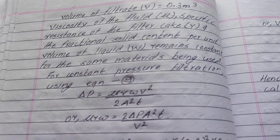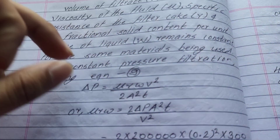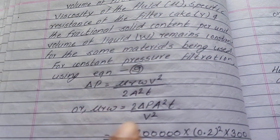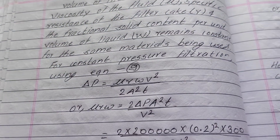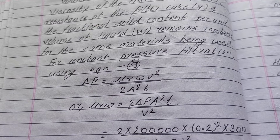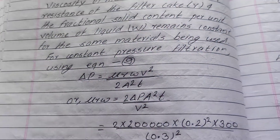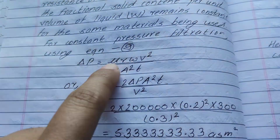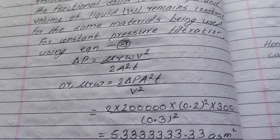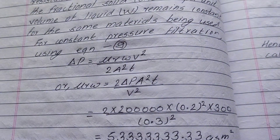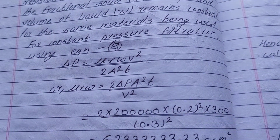I will use the constant pressure formula: ΔP = μrwb² / (2A²t). From this, μrw = 2ΔP A² t / b².